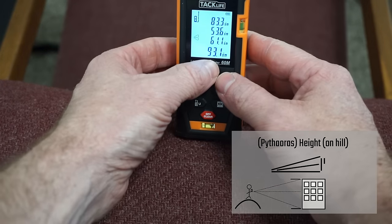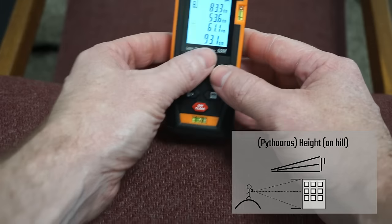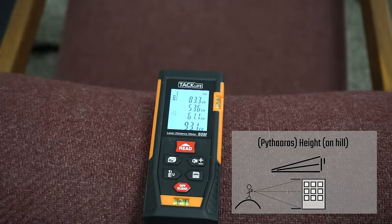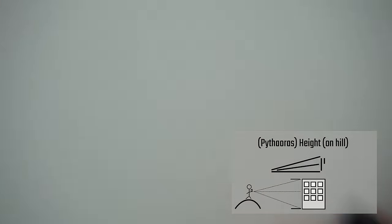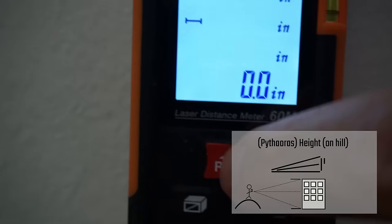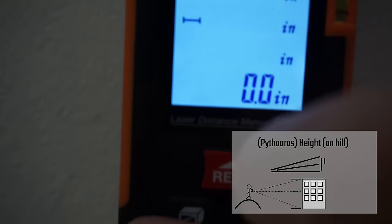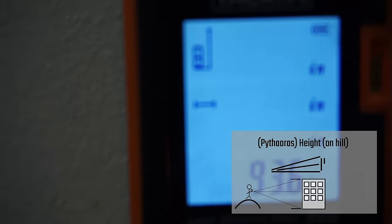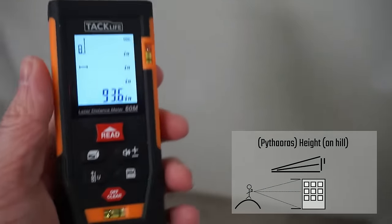So here we have 93.1. So let's go over and try to verify. I'll place this on the baseboard. Press read and 93.6. That's really close. That's awesome.